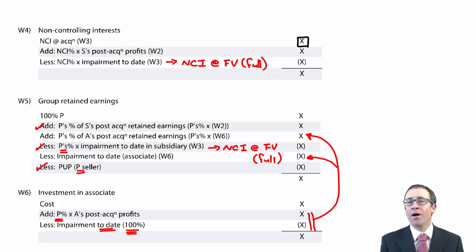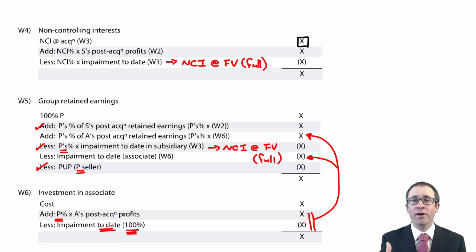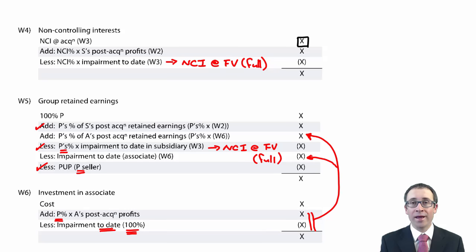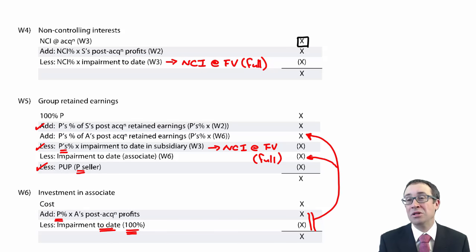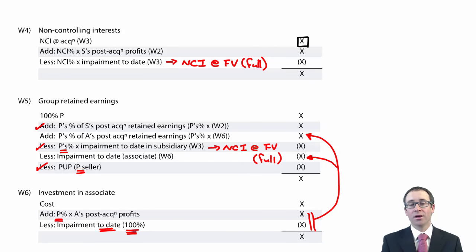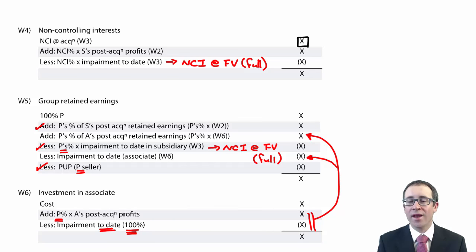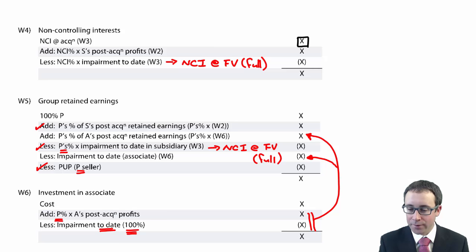In terms of how the marks work, it tends to be one mark for every number you put in. There are 35 marks for the group accounts — technically you need 18 correct numbers to pass the group accounts section. But you'll be scoring much higher than 18 in the real exam.